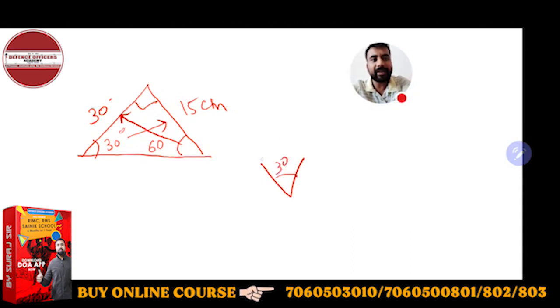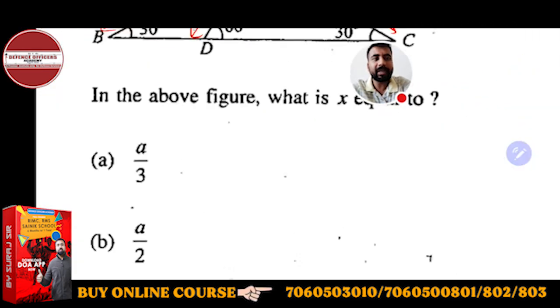In the same way, if the 30 degree angle is there, the opposite side will be smaller. And if 60 degree angle is there, the opposite side will be bigger, double of 30. So here the same concept applies.